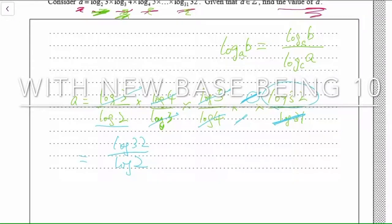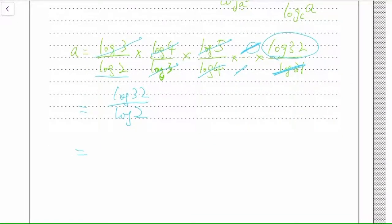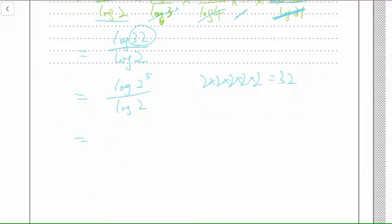Then let's think about what this is. It turns out 32 is related to 2 — specifically, 32 is 2 to the power of 5, since 2 × 2 × 2 × 2 × 2 = 32. So we have log(2⁵) divided by log 2. By the log power property, the 5 drops to the front, giving 5 × log 2 over log 2. The log 2 cancels, and you get 5.